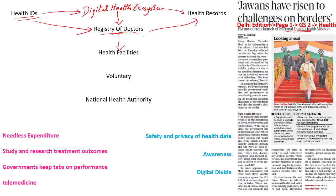How does this whole process work? Under the scheme, each patient will be given an ID card on which confidential medical data such as prescriptions, diagnostic reports and discharge summaries will be stored. Let me explain this in simple terms. Let's say there is a patient. The patient goes to the doctor. The doctor is not able to understand what is the issue, so he asks the patient to carry out certain tests. The tests are conducted and the reports are given, so the doctor understands what is the issue with the patient.